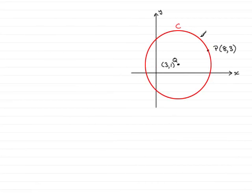Now in this question we're told that we have a circle C with a center at 3,1. I've labeled the center Q and it passes through the point P(8,3). And what we've got to do is find the equation of the circle.